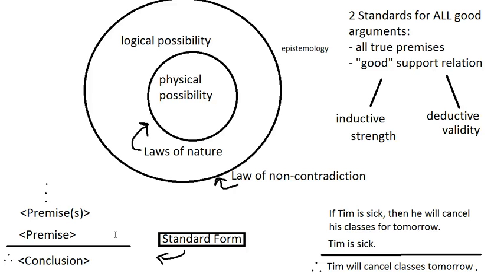When people make arguments to us, we challenge the foundations on which they're making their case. But sometimes, transitioning to a good support relation — let's say there's a lot of dispute about whether the premises are true or false. This happens all the time. On the news, people are disputing what actually happened with something, with reporting that news. Different governments say 'this happened' — 'no, it didn't happen.'